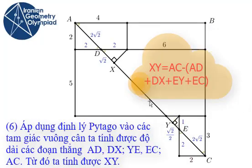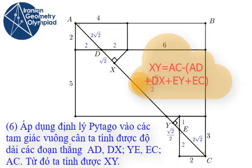And so I can calculate XY, which is AC minus these numbers. And I know that AC is equal to 10 times square root of 2. So I have XY is equal to 9 times square root of 2.